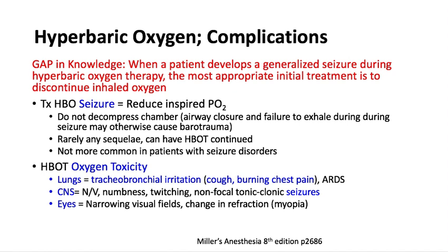Oxygen toxicity in general: giving 100% oxygen for about 10 to 12 hours can cause tracheobronchial irritation such as coughing and burning chest pain, and ARDS-like pulmonary symptoms. CNS effects include nausea, vomiting, and seizures. In the eyes, there is narrowing of the visual fields and a change in refraction. So the lungs, the brain, and the eyes are the target organs for HBO oxygen toxicity complications.